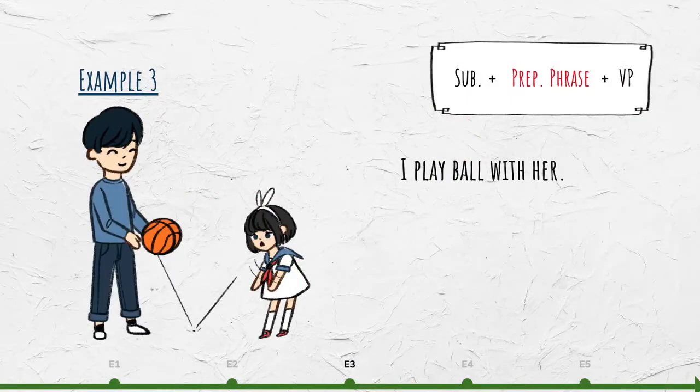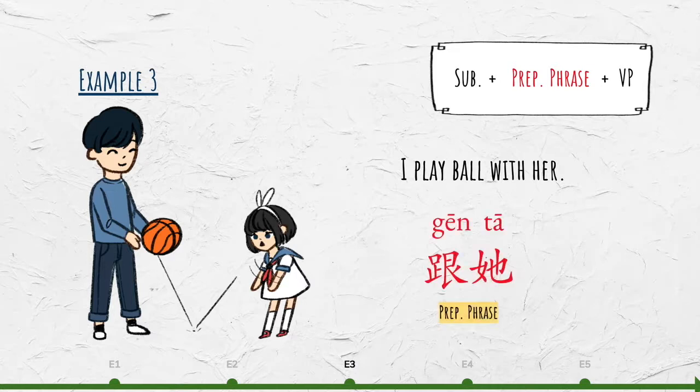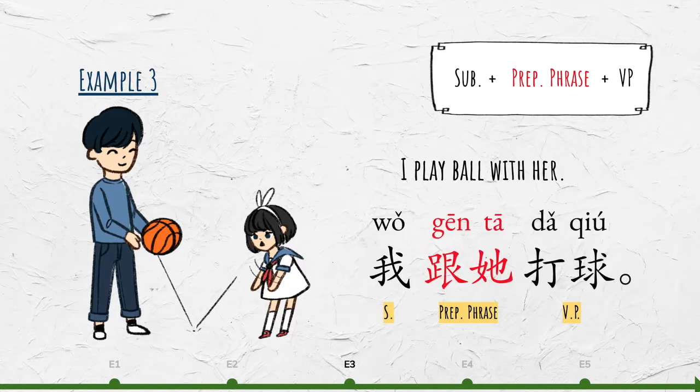For example, I play ball with her. With her? 跟她. Play ball? 打球。I play ball with her. 我跟她打球。